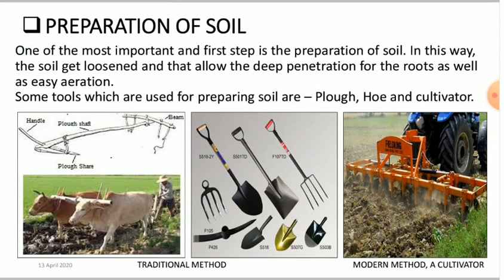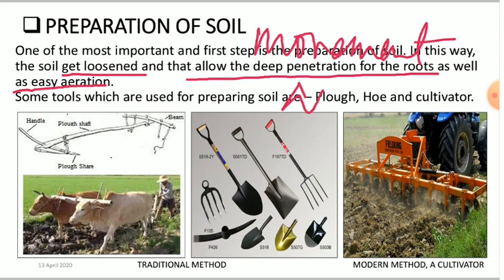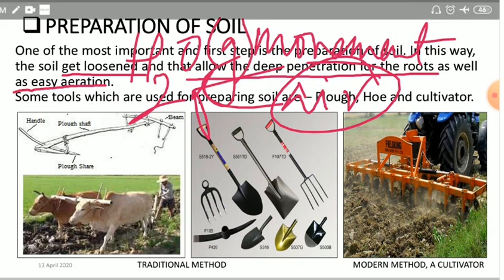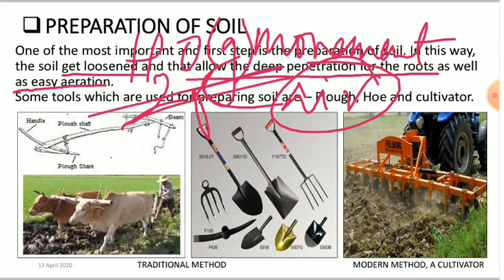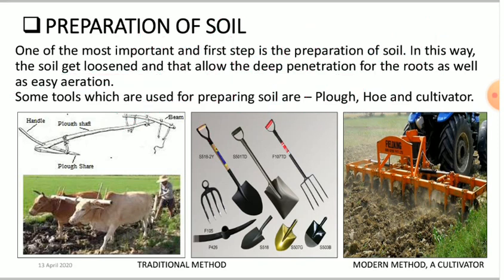Let's look at the first step: preparation of the soil. Preparation of the soil simply means loosening and turning of the soil. This is beneficial because it allows deep penetration of the roots of the plants and allows easy aeration. Aeration means movement of air. With air movement, moisture — water in vapor form — will also move easily through the soil, which is beneficial for the crops.